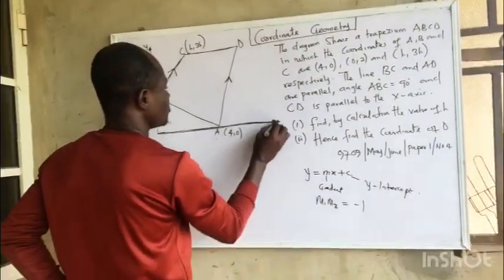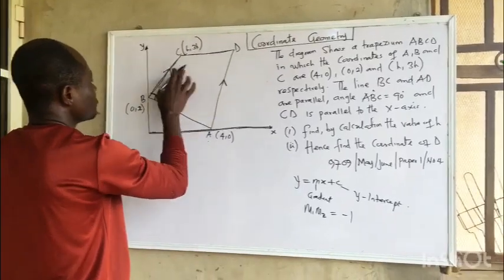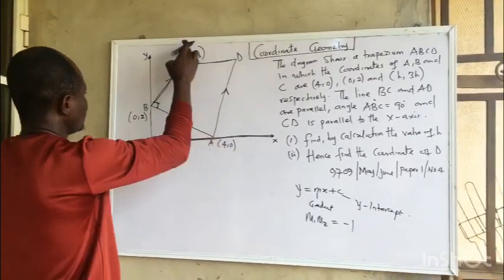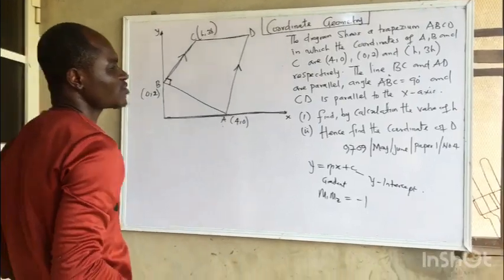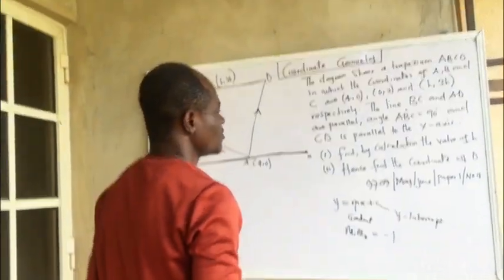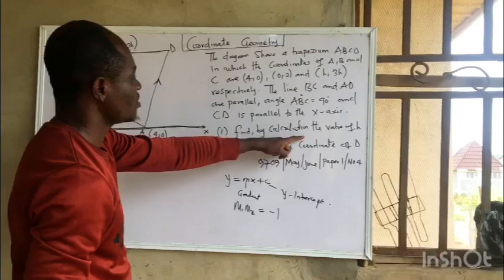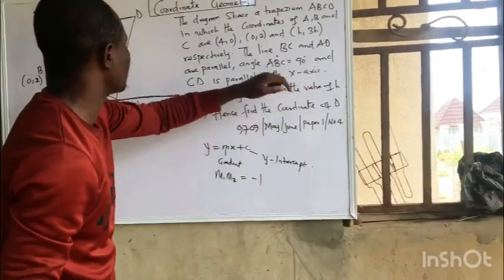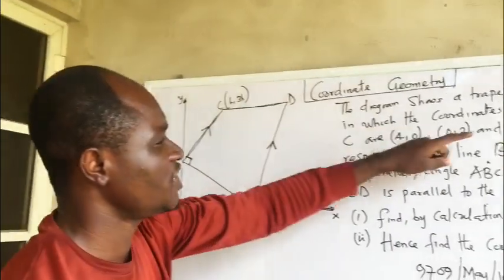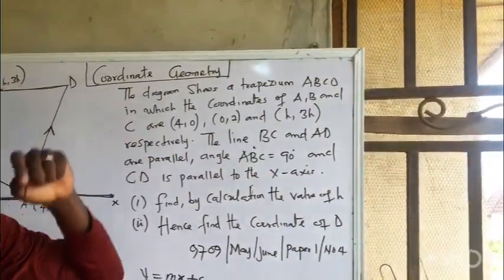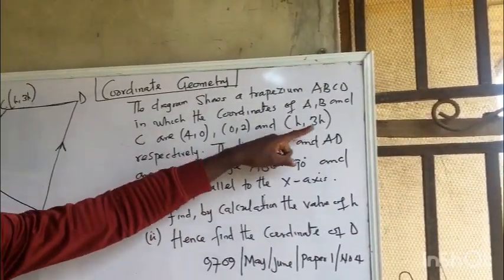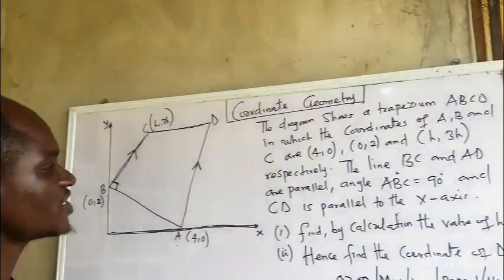Those are the conditions: BC is parallel to AD, CD is parallel to the x-axis, and BC is perpendicular to BA. The question asks us to find by calculation the value of H, where point C has coordinates (H, 3H). Once we find H, we can determine the full coordinates of C.